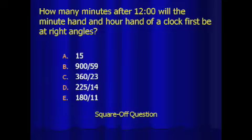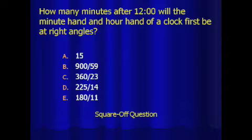How many minutes after 12 will the minute hand and hour hand of a clock first be at right angles? Is it A, 15 minutes; B, 900 over 59 minutes; C, 360 over 23 minutes; D, 225 over 14; or E, 180 over 11? We have five choices for this.